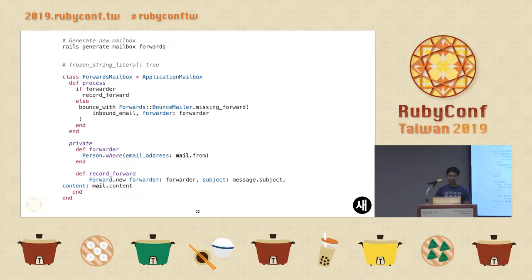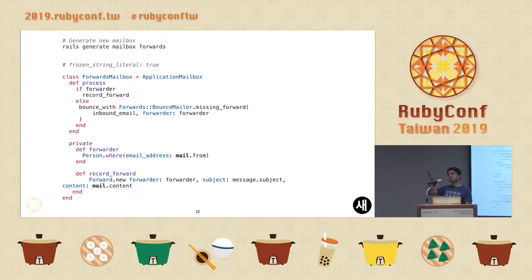This process method is given the email object, which you can then process as you want. For example, as you can see here, it first tries to find which existing user in the system sent this email from the mail-from address. If it doesn't find it, you can take different actions, such as bouncing or notifying the user.